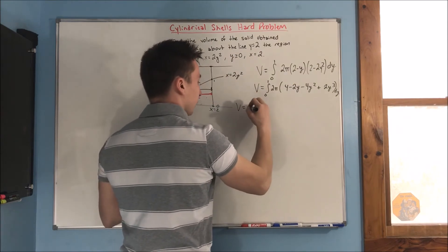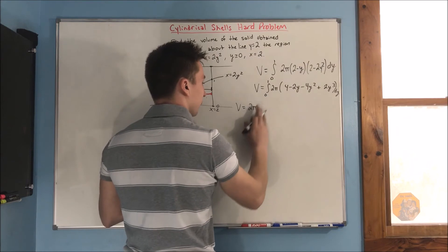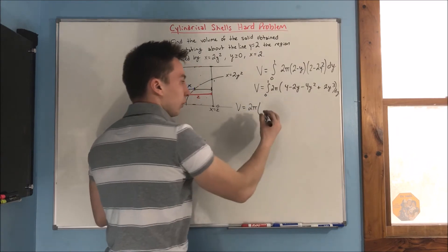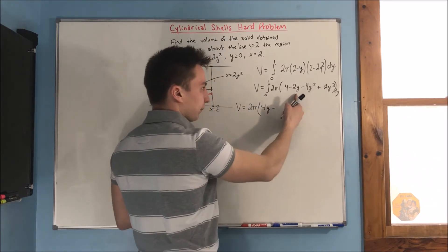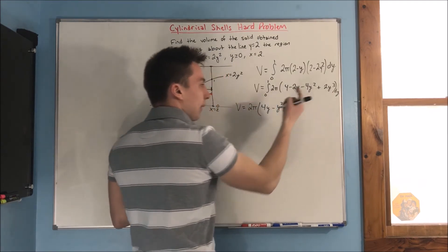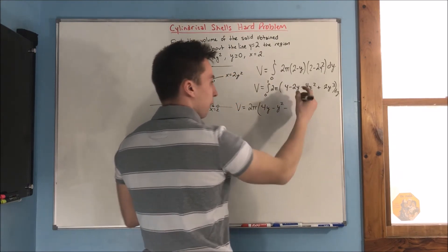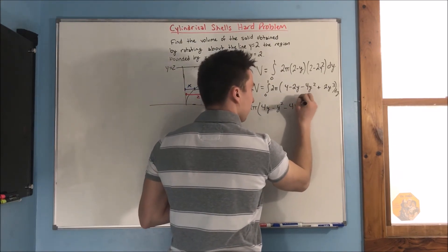dy volume is going to equal 2 pi. We'll pull that 2 pi right out. We can just integrate already. We're going to get a 4y minus. That's going to be y squared minus. That is going to be a 4y cubed over 3.